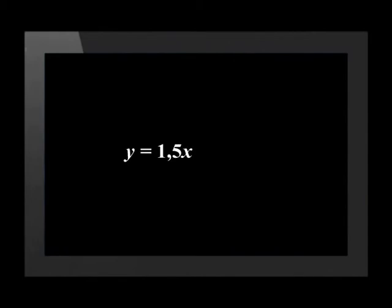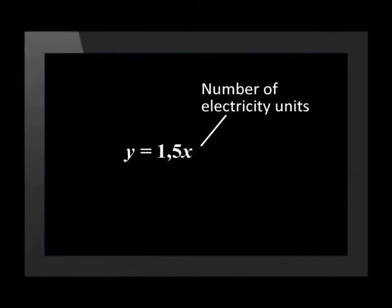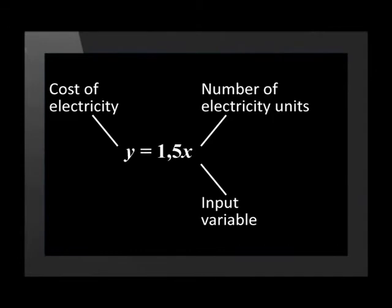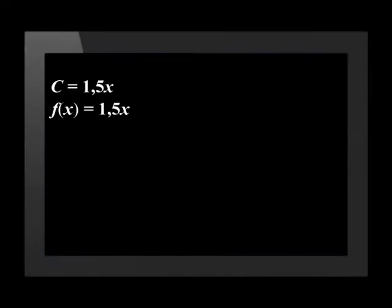The cost of electricity is represented by the function y = 1.5x. x represents the number of units of electricity used and is the input variable. y represents the cost of electricity and is the output variable. The cost is calculated in rands. The cost of electricity is dependent on the number of units of electricity used. Let's write this in functional notation: it now becomes f(x) = 1.5x. This shows us that the value of f relies on the input value of x.